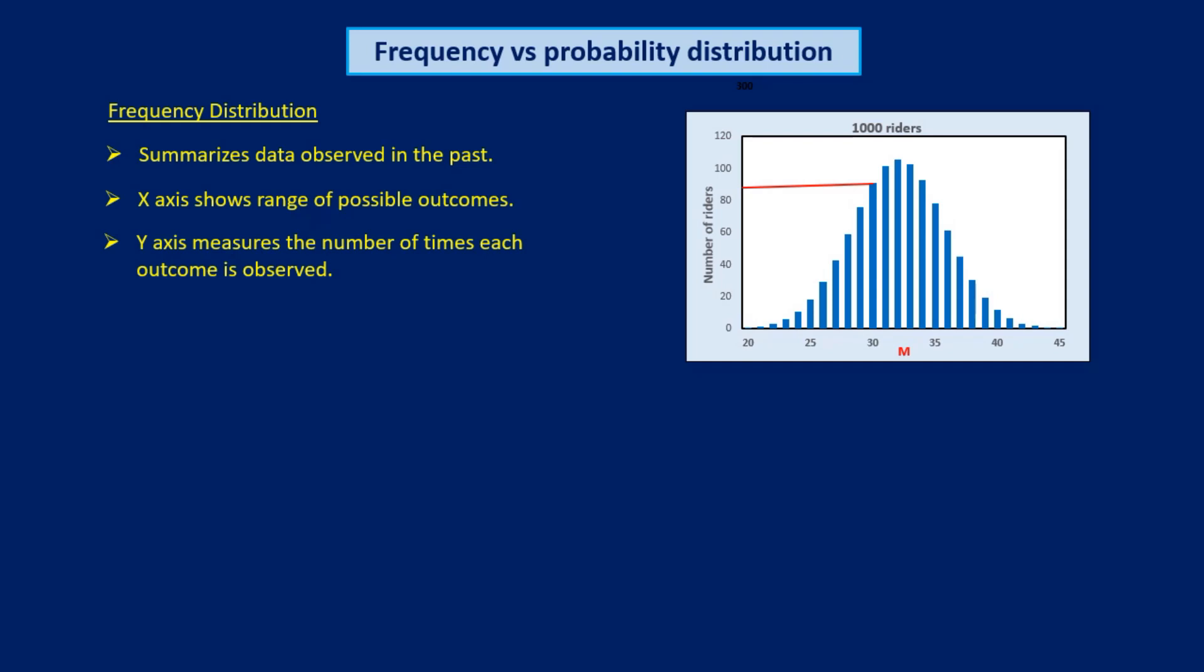For example, this frequency distribution of Raleigh results for a thousand riders tells us that 86 riders rode between 30 and 31 miles. In a frequency distribution, the sum of the y-values equals the total number of observations of the variable.